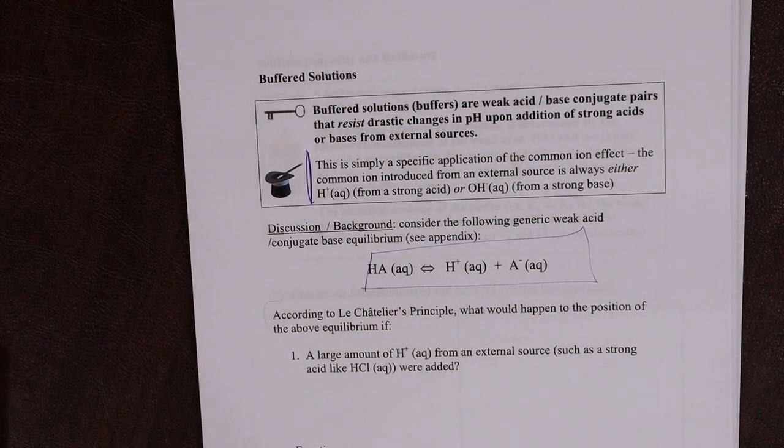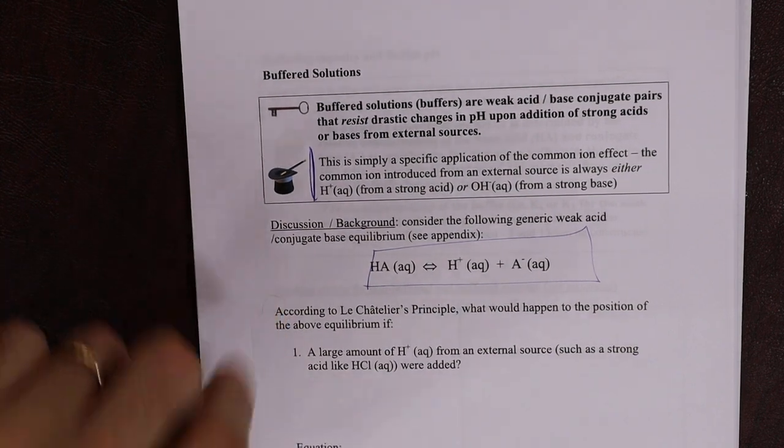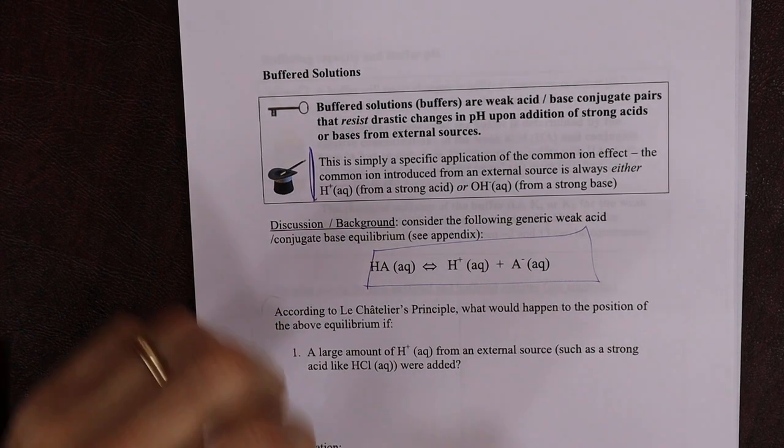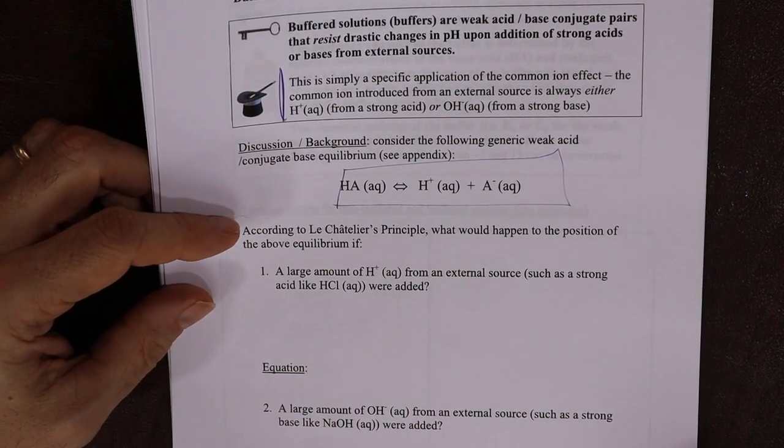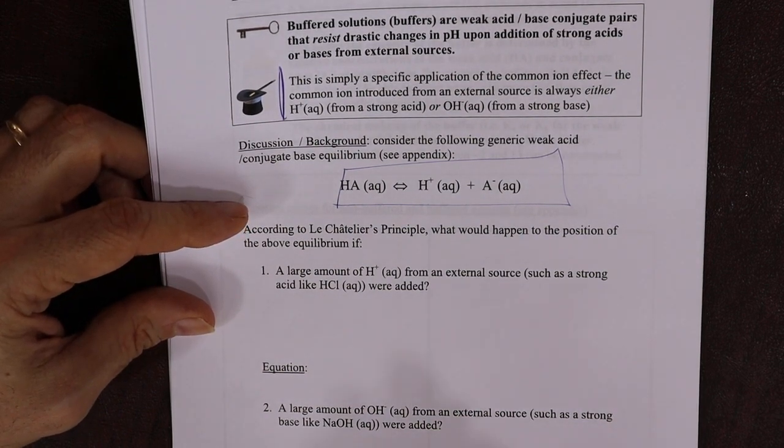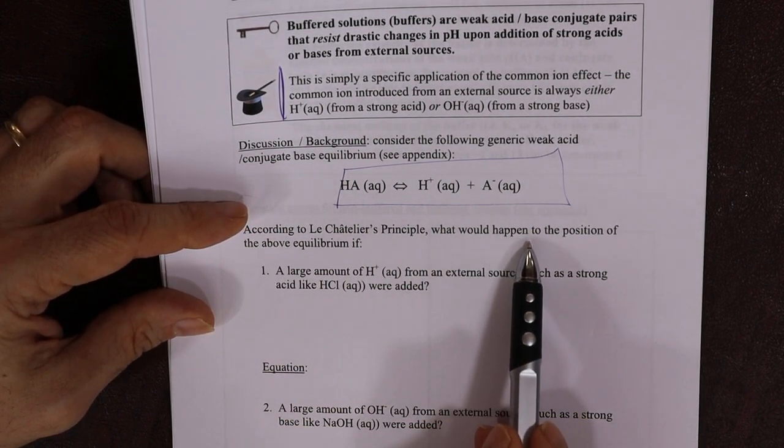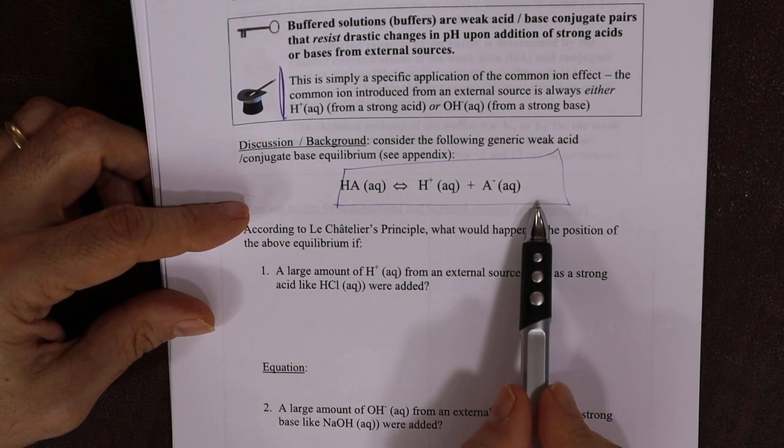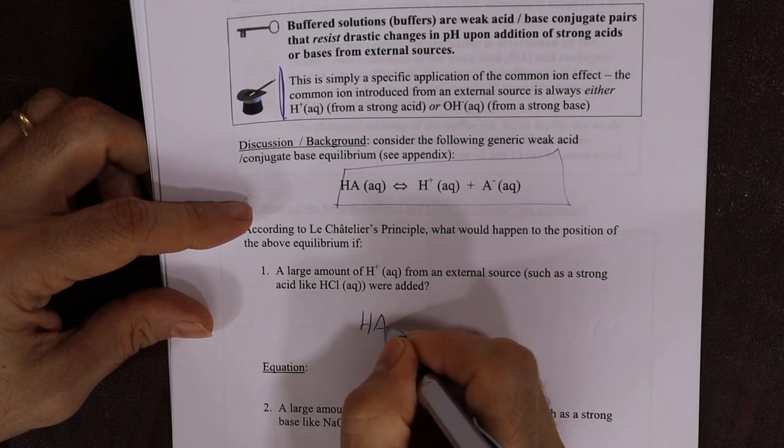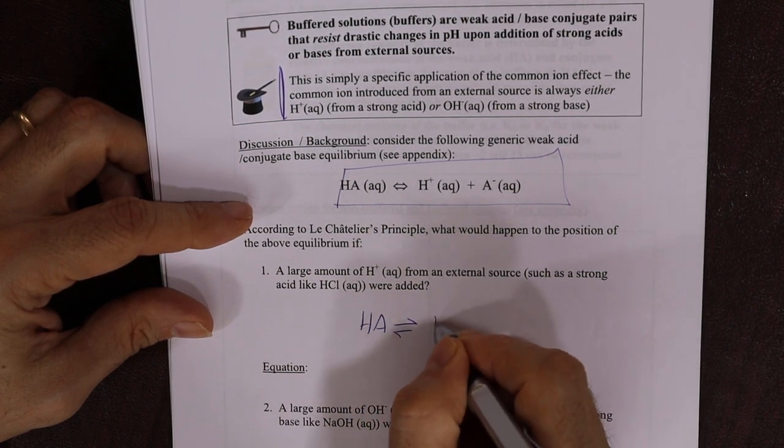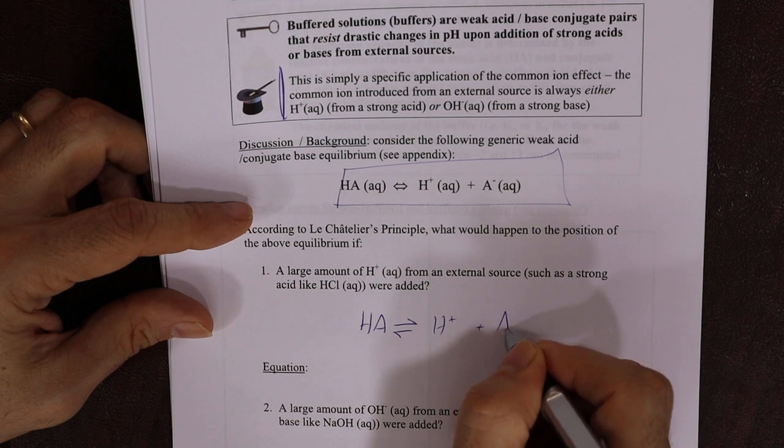This is a very specific application of the common ion effect. We have both conjugate base and weak acid in the same beaker. The HF one and the acetic acid one we just did were a buffer solution. We just didn't delve into the math in any more detail. It's something we've already looked at, and we're just going to talk about it in terms of how that solution would change if we started to mess with it in terms of adding H plus and OH minus.